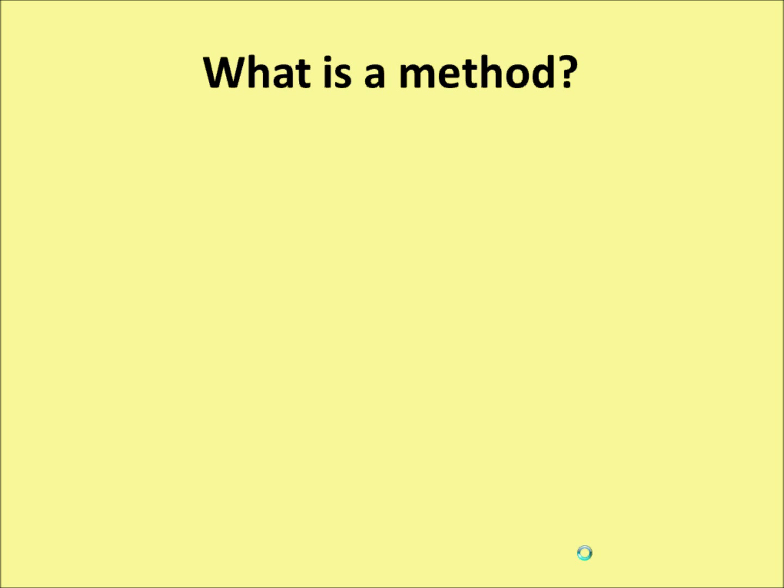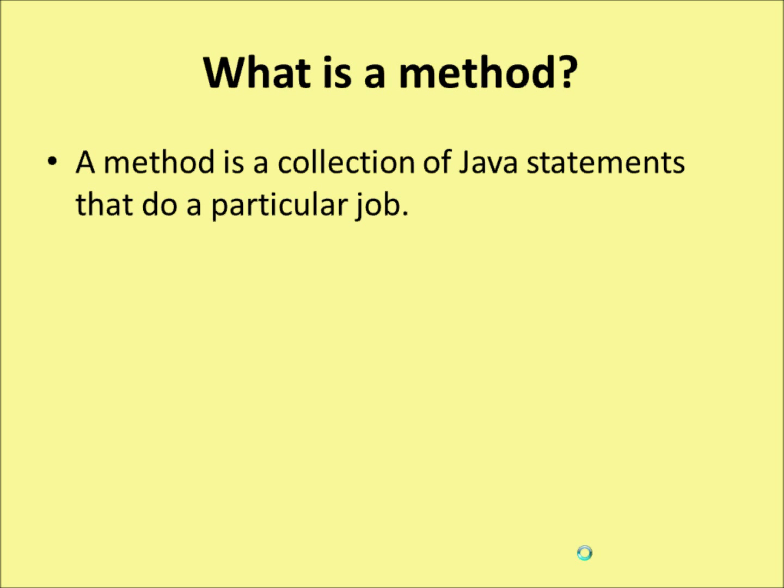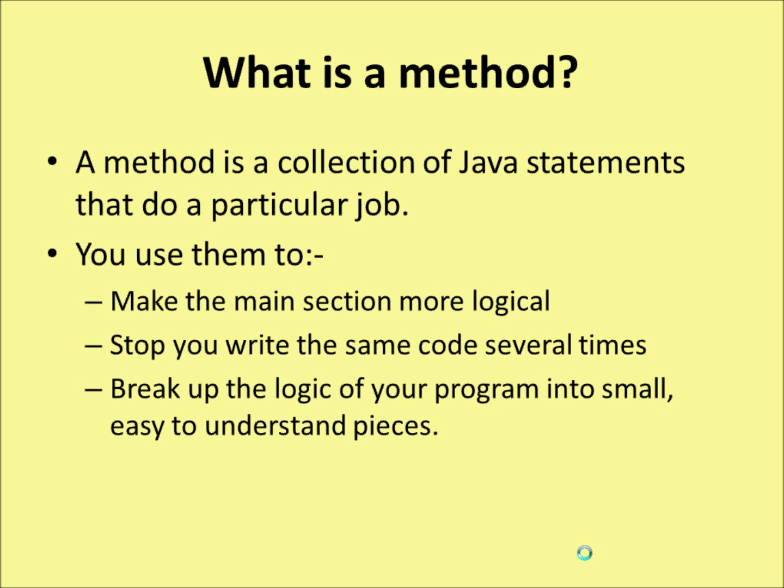Welcome to this video on using methods in Java. My name is Andy Wicks and in this brief video we're going to look at what a method is and what it does. A method is a collection of Java statements that do a particular job. You use them to make the main section of your program more logical, to stop you writing the same code several times, and to break up the logic of your program into small easy-to-understand pieces.